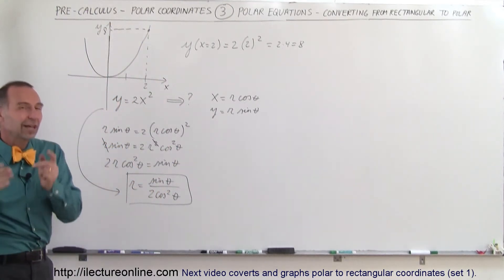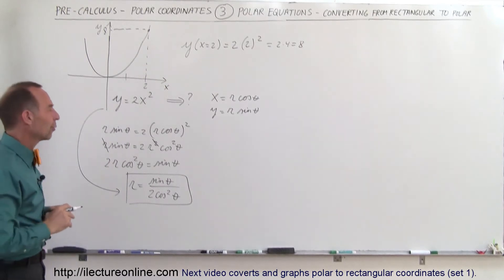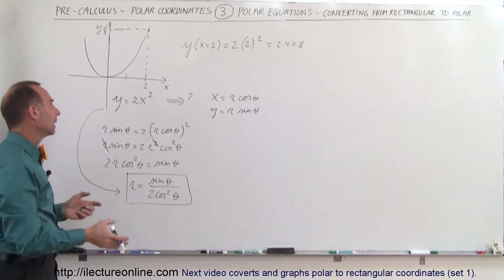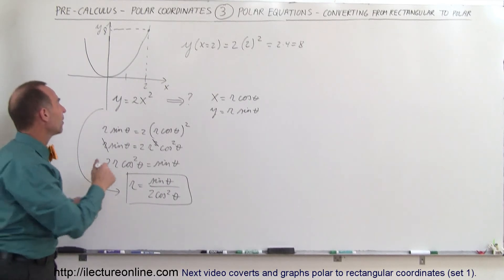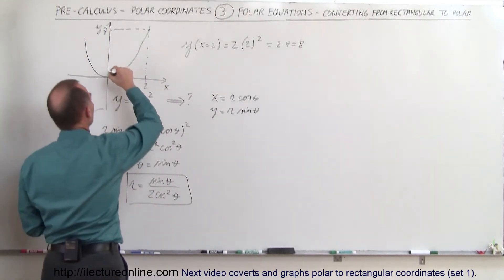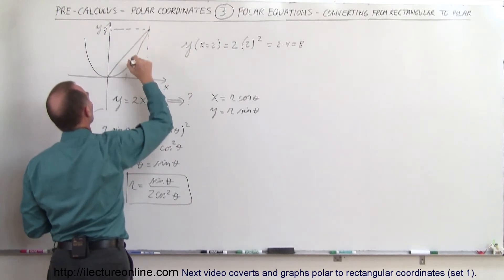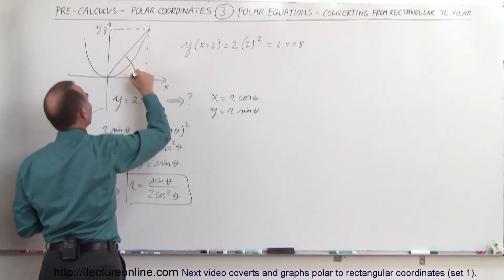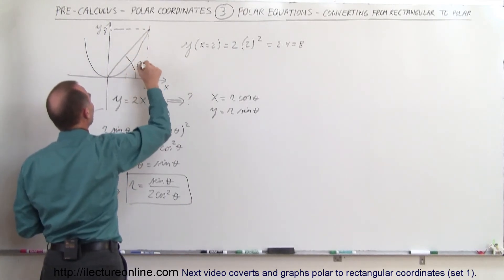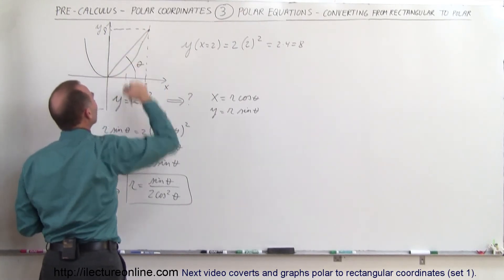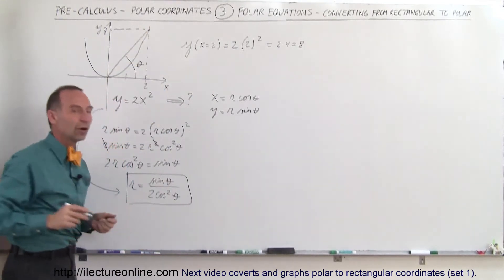The same point can be found using polar coordinates. In other words, give me the value for theta and I will give you the value for r.